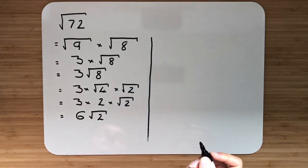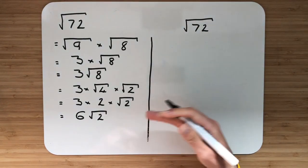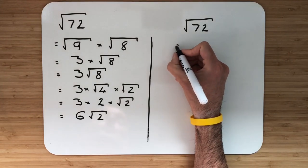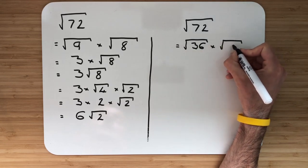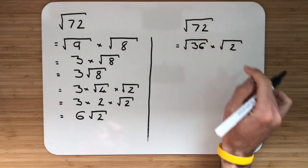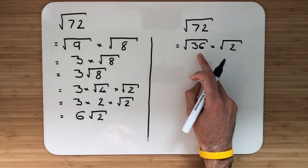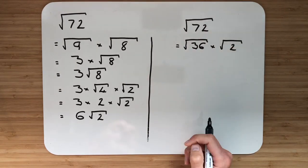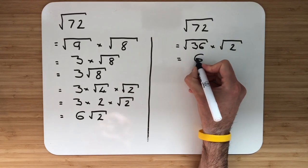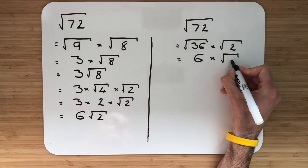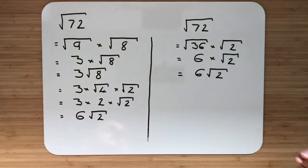Now let's look at a different way we could have tackled this. If we had root 72, yes 9 multiplied by 8 gives us 72, but we could also say root 36 multiplied by root 2. 36 multiplied by 2 gives me 72, and 36 is a square number. This tells us that when doing these questions, we should always look for the highest square number that is a factor. Simplifying down, the square root of 36 is 6, multiplied by root 2. So the final answer is 6 root 2.